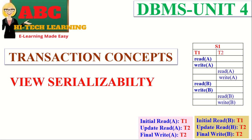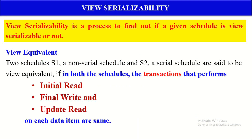Hello viewers. In this video we are going to discuss view serializability. View serializability is a process used to find out if a given schedule is view serializable or not. In other words, this view serializability technique is used to find out if a given schedule is view equivalent of its serial schedule or not. So if a schedule is determined as view serializable or view equivalent of its serial schedule, that schedule always gives consistent result.